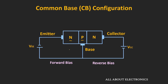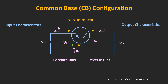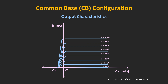Now let's talk about the output characteristics. The collector current is the output current and the voltage between the collector and the base is the output voltage. The output characteristics define the relationship between the collector current and the collector-to-base voltage VCB when the emitter current is kept constant. As the emitter current increases, the collector current also increases linearly.